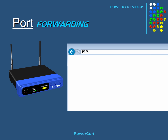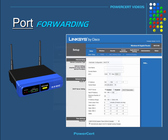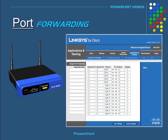In a web browser, we enter the IP address of the router, and now we are in the router's configuration page. Depending upon what router you're using, the configuration page will look different depending on the brand. In this example, I'm using a Cisco Linksys router, so the layout may be a little different from yours. Basically, you need to go to the port forwarding section to configure port forwarding.